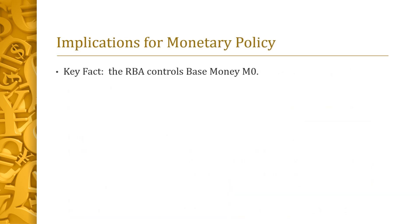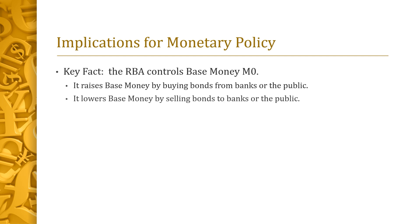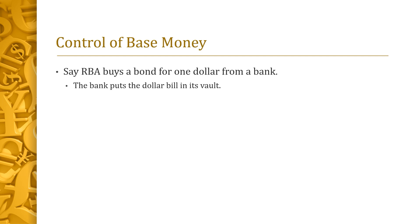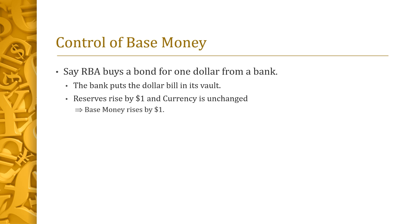We now study some implications for monetary policy. A key fact: the RBA has sole control over base money. It raises base money by buying bonds from banks or the public, and lowers it by selling bonds. To see this, consider a thought experiment in which the RBA pays one dollar to a bank in return for a bond. The bank puts the dollar in its vault, raising reserves by one dollar. Since the dollar is not held by the public, currency remains unchanged. Hence, the RBA's bond purchase raises base money by exactly one dollar.